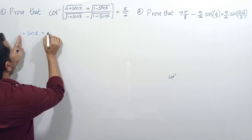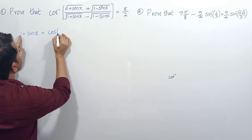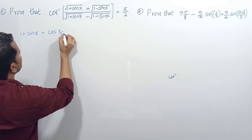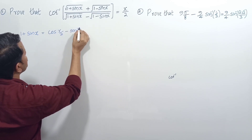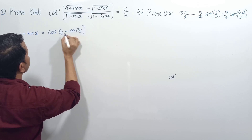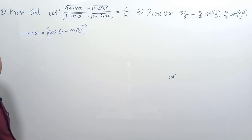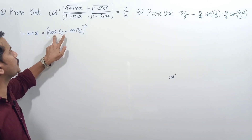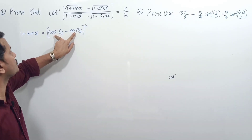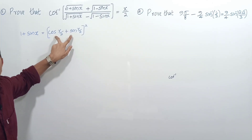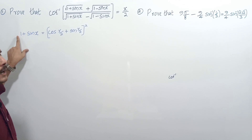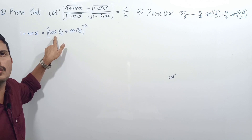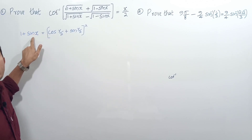So 1+sinx is equal to (cos(x/2) + sin(x/2))². If you expand and check: cos²(x/2) + sin²(x/2) equals 1, and 2·sin(x/2)·cos(x/2) equals sinx itself.